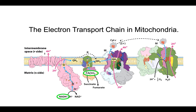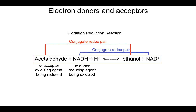We are here in the mitochondria, talking about four enzyme-catalyzed redox reactions. To properly understand a redox reaction, let's remind ourselves about conjugate redox pairs. Looking at the reduction of acetaldehyde to ethanol by NADH: acetaldehyde is being reduced to ethanol, and NADH is being oxidized to NAD+. So acetaldehyde and ethanol are a conjugate redox pair, and NADH and NAD+ are also a conjugate redox pair.